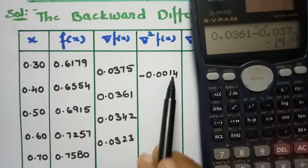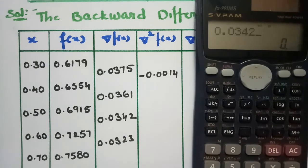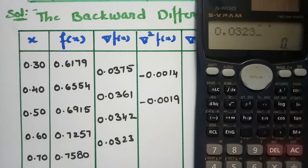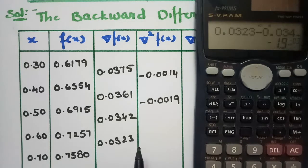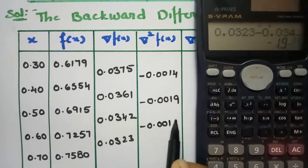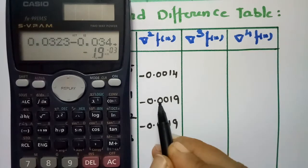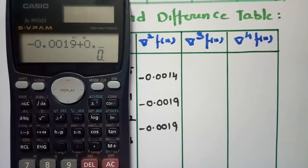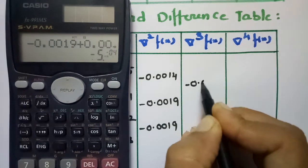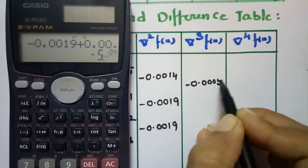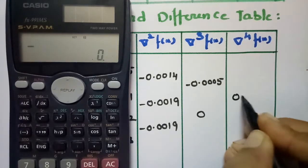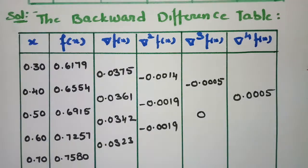Continuing the second differences: 0.0342 − 0.0361 = −0.0019, and 0.0323 − 0.0342 = −0.0019. For the third differences: −0.0019 − (−0.0014) = −0.0005. And for the fourth difference: −0.0019 − (−0.0019) = 0.0000. The value here is 0.0005 and these are all the values in the difference table.